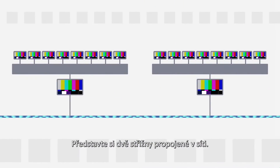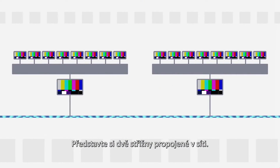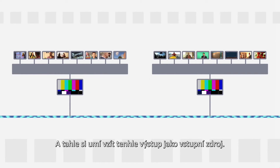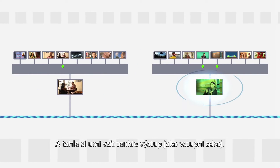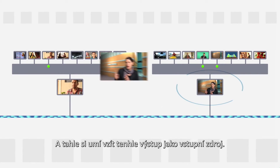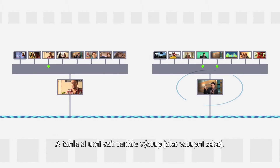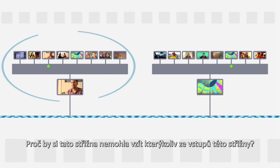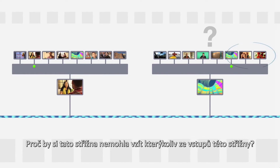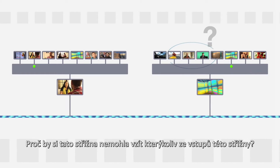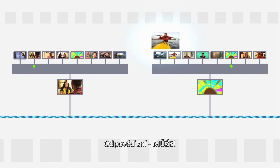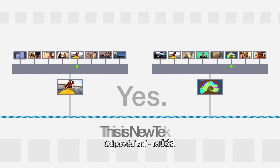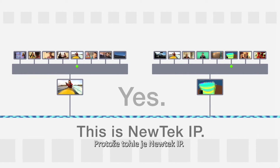Imagine two switchers on a network. This one has eight inputs, so does that one. And this one can take that one's output as a source. But wait — why can't this switcher choose from any of that one's sources? The answer is, it can. Because this is NewTek IP.